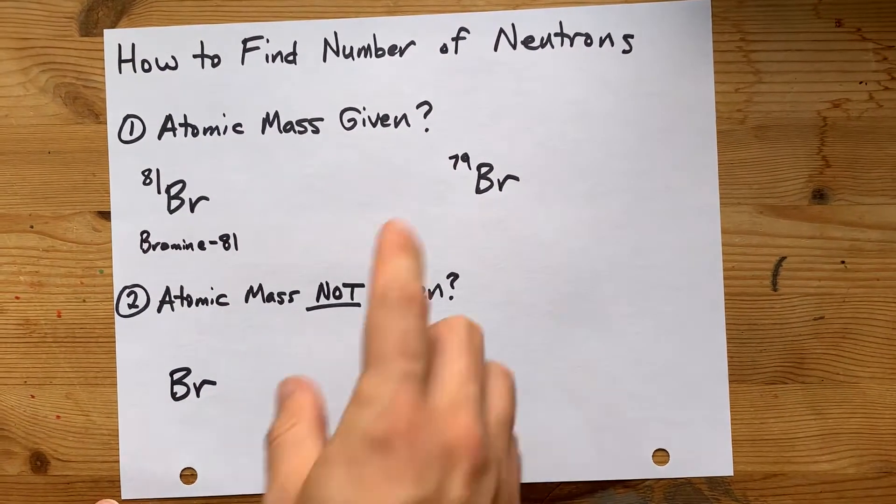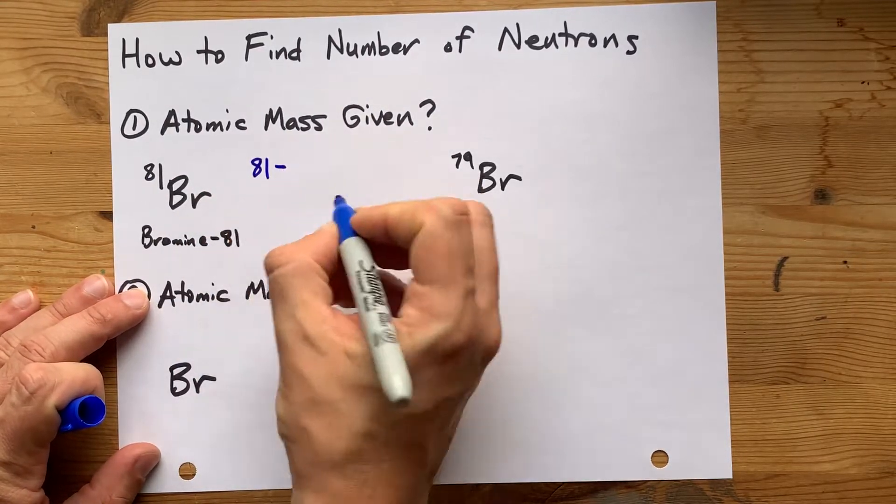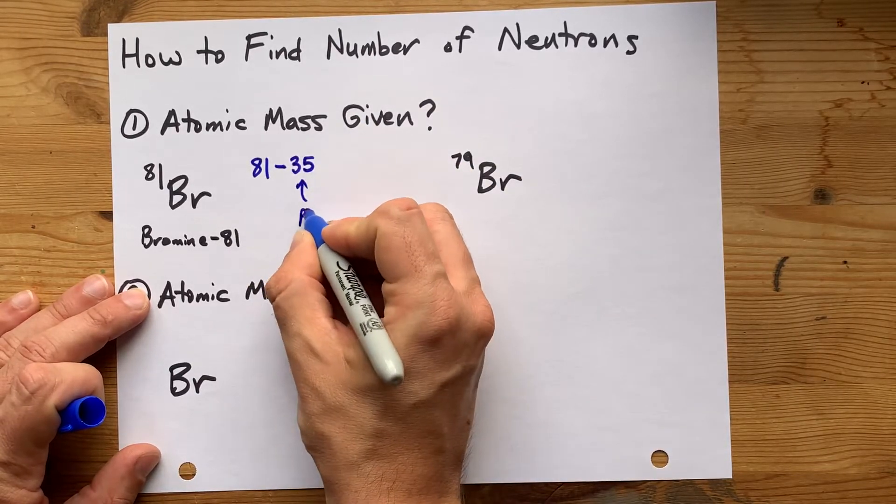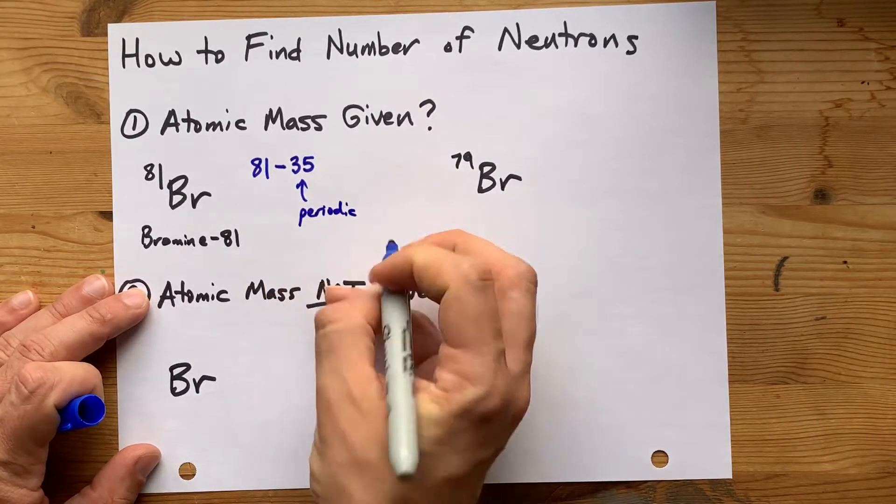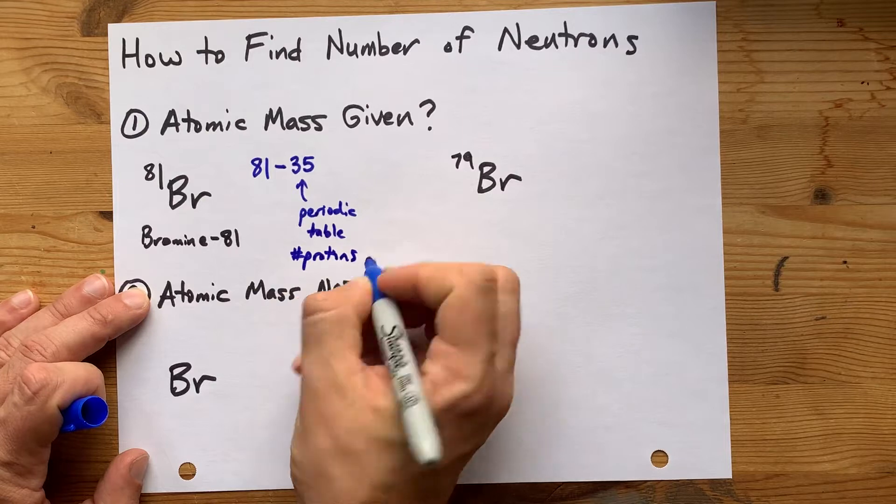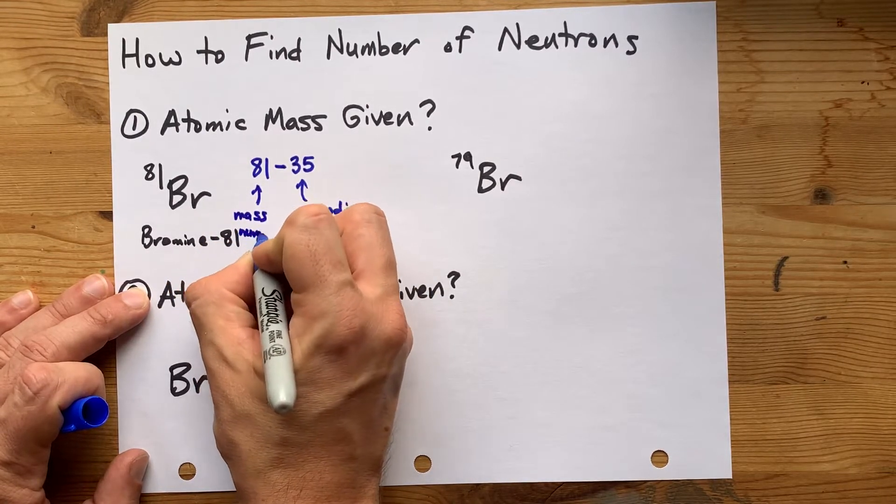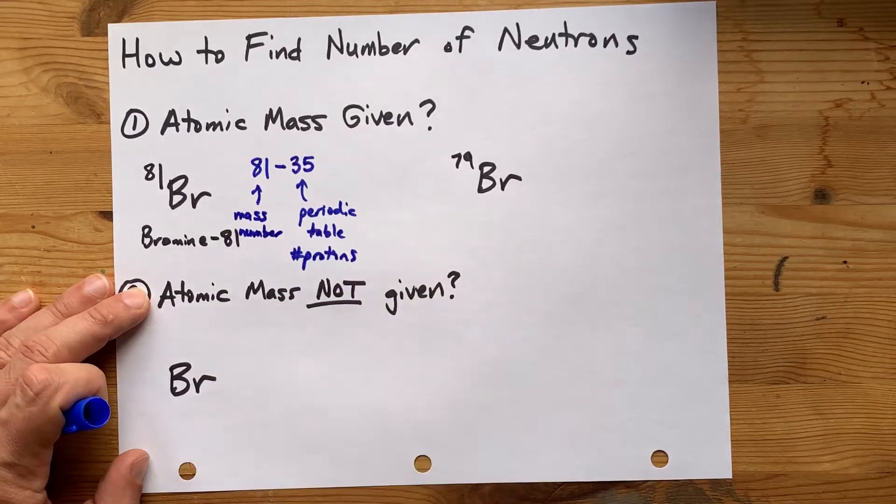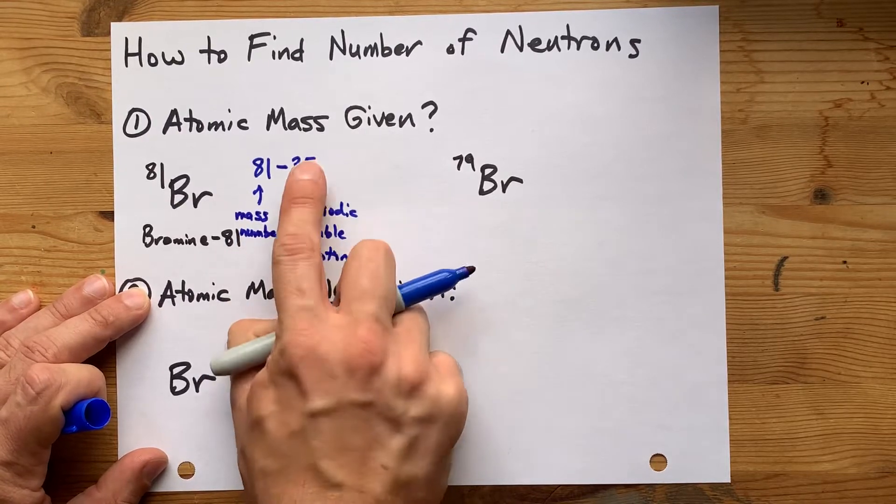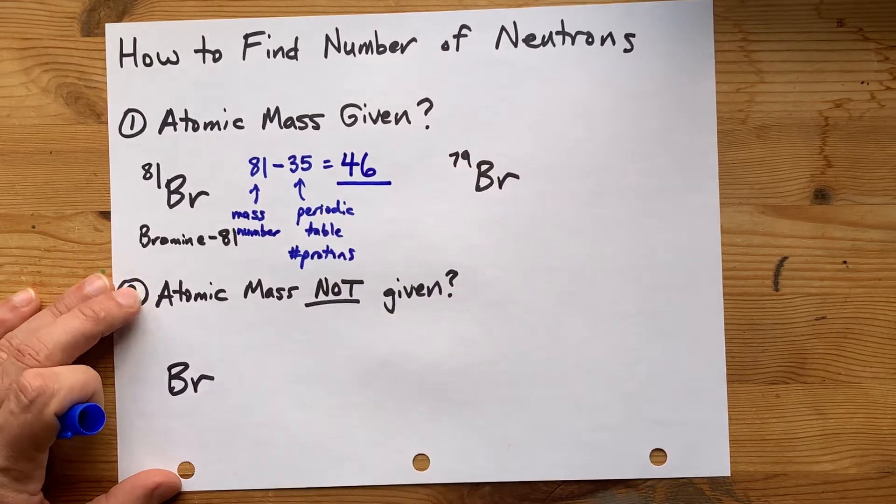So the number of neutrons is going to be this mass number minus the atomic number from the periodic table. You look that one up and get that. Periodic table is the source of it. It is the number of protons. This number here, teachers are going to call the mass number of that particular atom or isotope. The mass number is protons and neutrons combined. You take away the number of protons, and it gives you the number of neutrons that are in that particle.